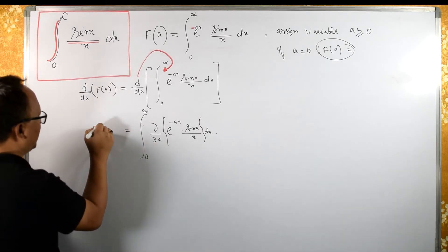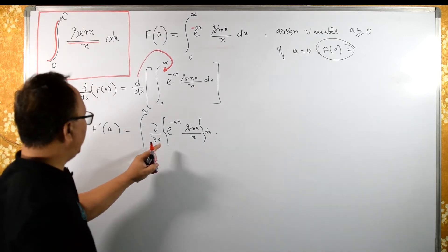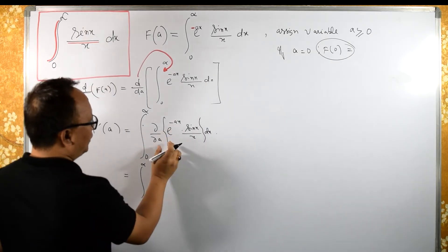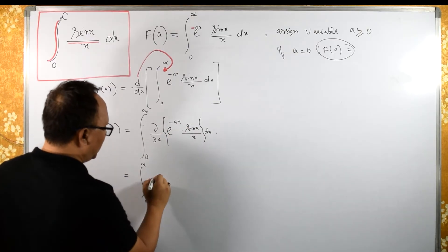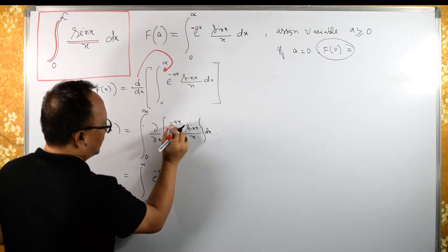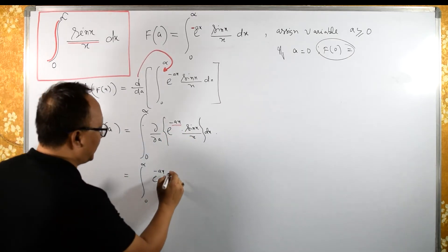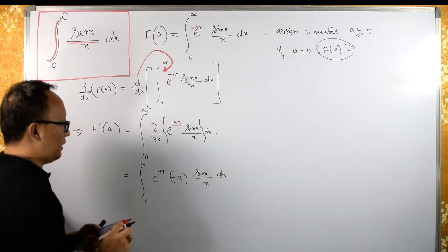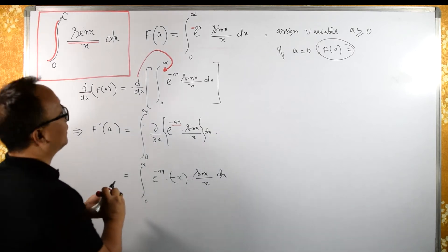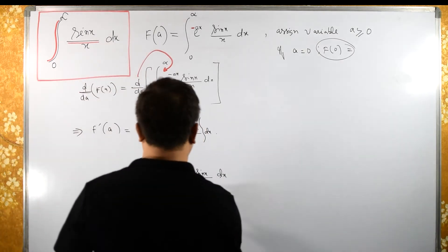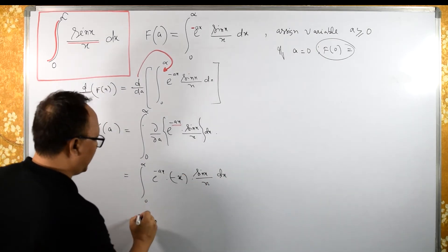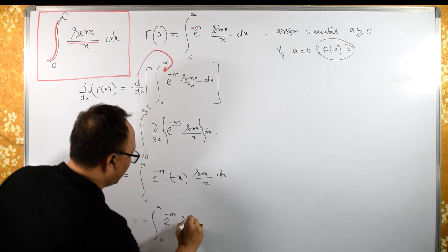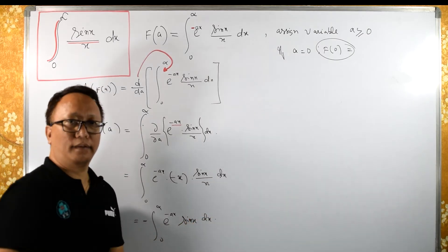On the left-hand side we have f'(a). Now differentiating with respect to a: the derivative of e^(-ax) with respect to a gives minus x. So e^(-ax) differentiates to give minus x, and then sin(x)/x dx remains. The x from differentiation and the x in the denominator cancel, giving the integral from 0 to infinity of minus e^(-ax) sin(x) dx.